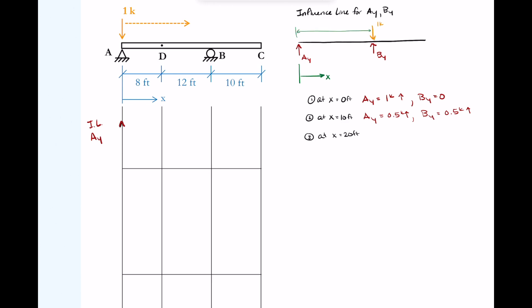Next, I'll look at x equals 20. I've now put it right over B. Again, this is pretty simple. AY is going to be zero, BY is going to be one. All of that one kip load will be going directly into that roller support.